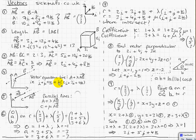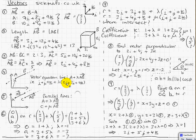For example, if lambda was 2, you'd start from i + j + k and go 2 times the direction vector. So you'd add 2 × 2i + 2 × 3j + 2 × 4k to the starting position. That gives 4i + 1i = 5i, 1j + 6j = 7j, and 8 + 1 = 9k. So the position along this line when lambda equals 2 would be 5i + 7j + 9k.